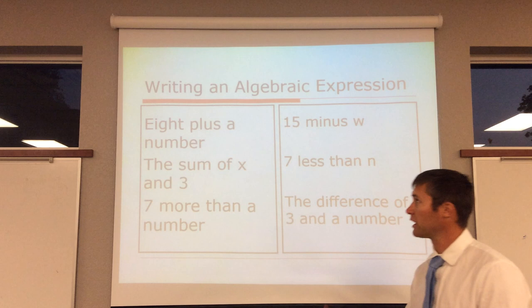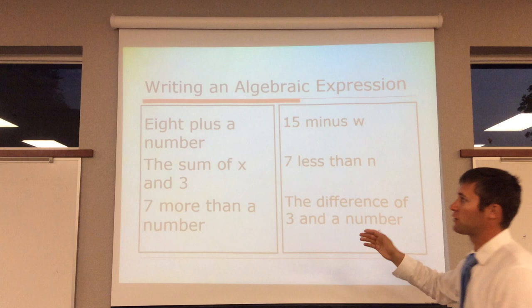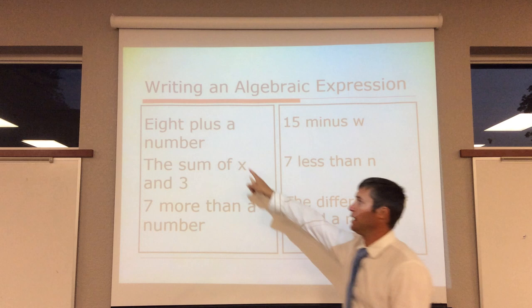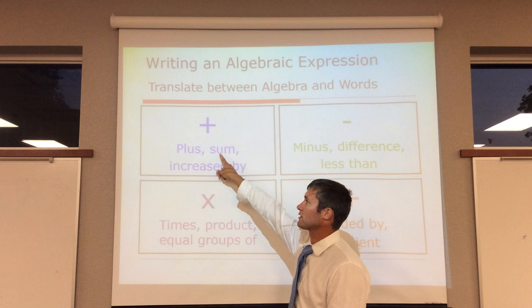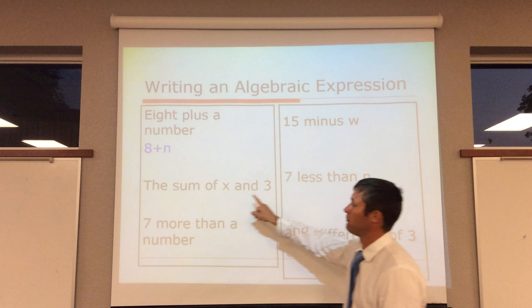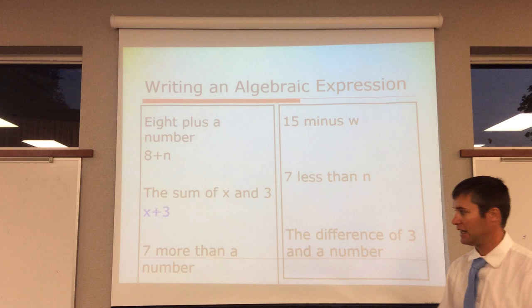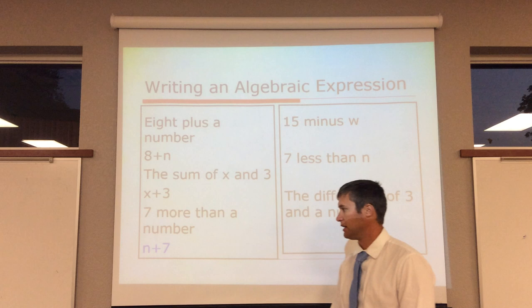So what we're going to do now is we're going to write an expression. Remember, an expression doesn't have an equal sign. 8 plus a number. 8 plus a number would be 8 plus n. If we go the sum of x and 3. Again, sum means addition. So we go x plus 3. 7 more than a number. Again, 7 more than means addition. So 7 more than a number: n plus 7.